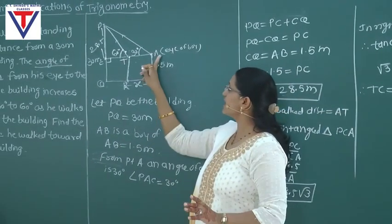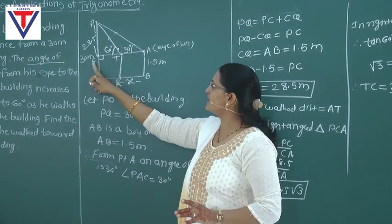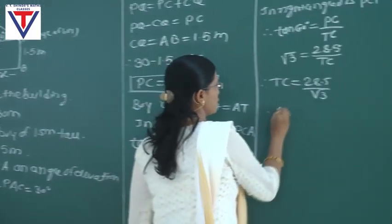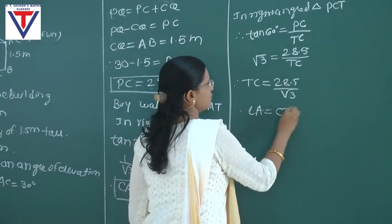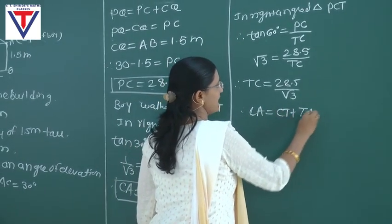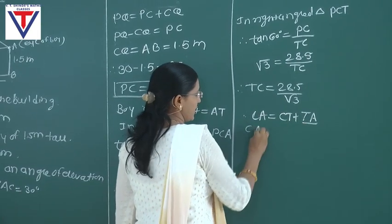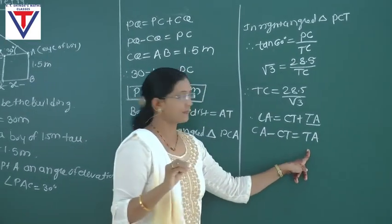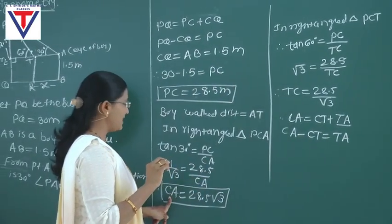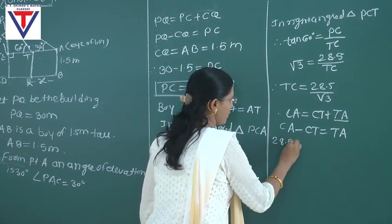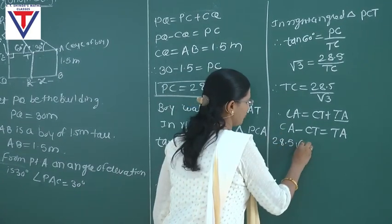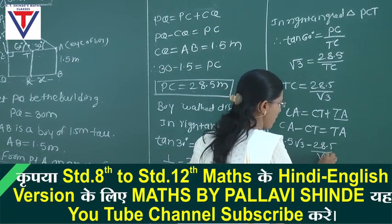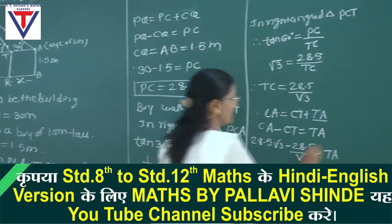The boy covered the distance from A to T. CA is equal to CT plus TA. We need to find TA. TA equals CA minus CT. CA value is 28.5 root 3 minus CT value which is 28.5 upon root 3, which equals TA. Taking 28.5 as common, we get 28.5 into (root 3 minus 1 upon root 3) equals TA.